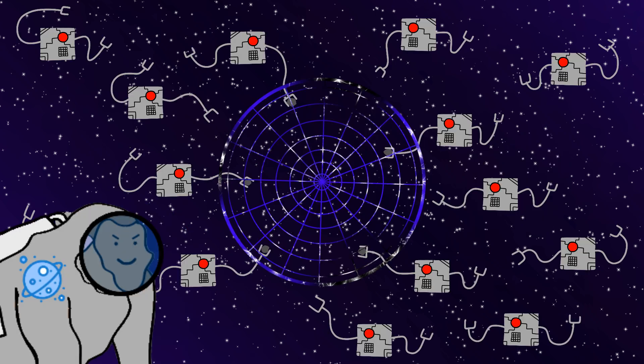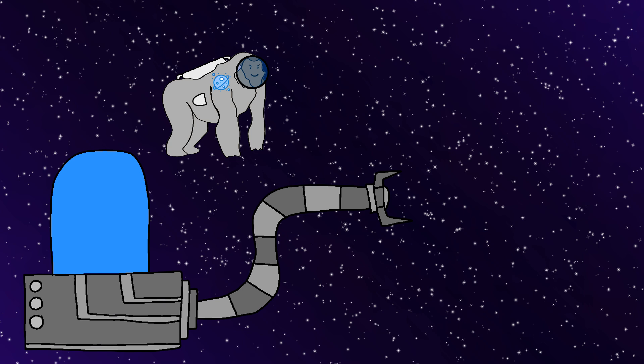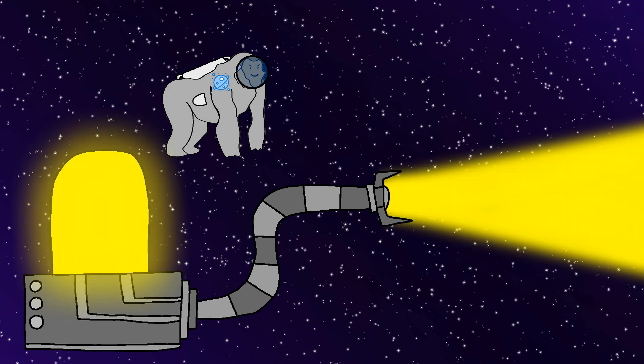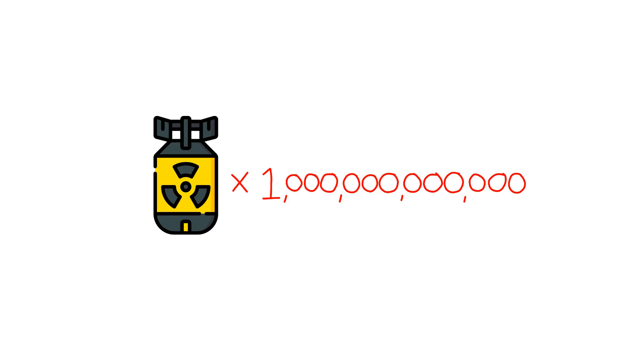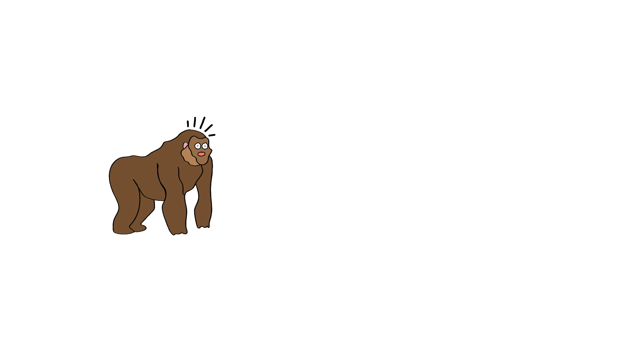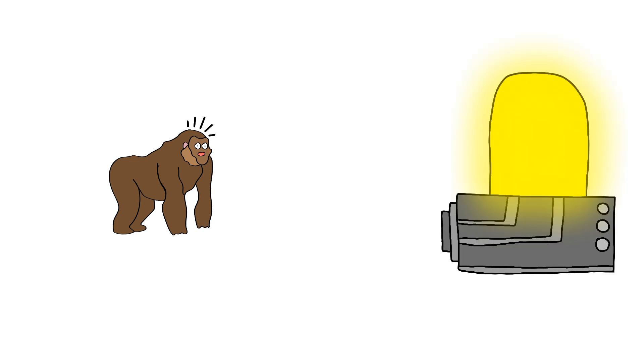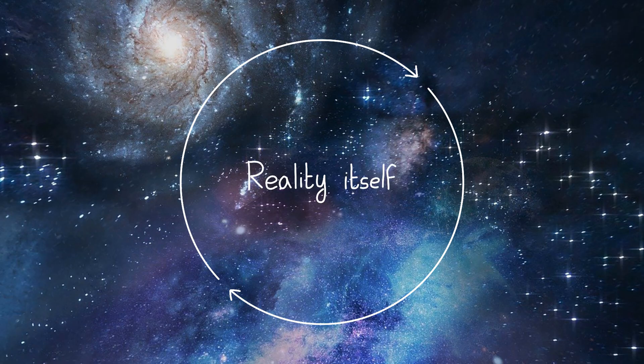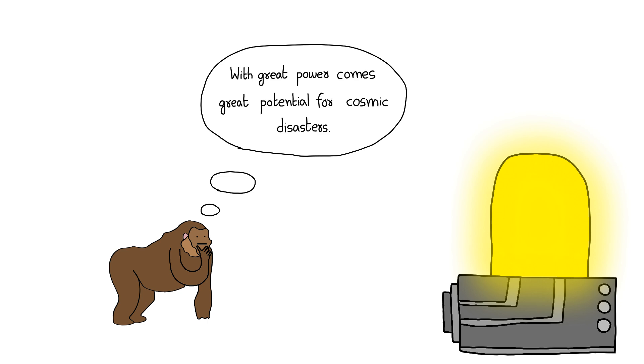And as Monkey builds more of the sphere, Monkey starts collecting absolutely ridiculous amounts of solar energy, like the power of a trillion nuclear bombs every single second. And Monkey realizes, Monkey now has basically unlimited energy to reshape reality itself. And Monkey's thinking, with great power comes great potential for cosmic disasters.